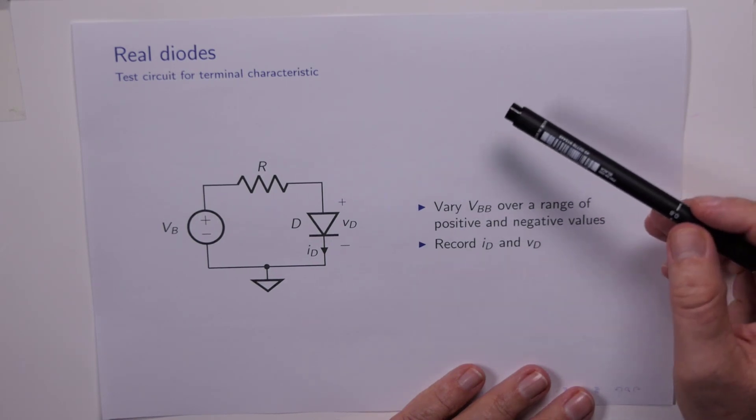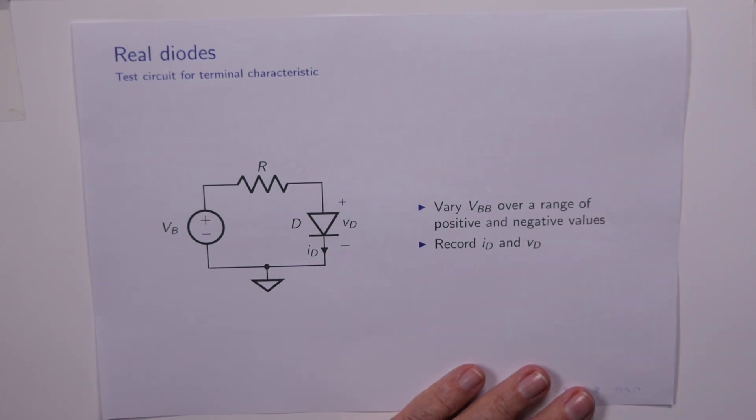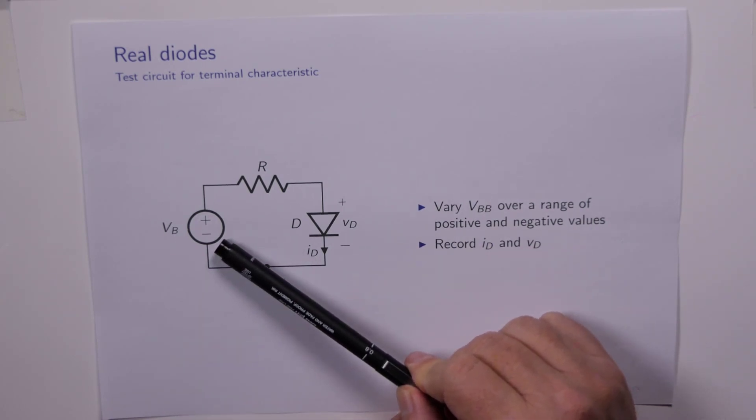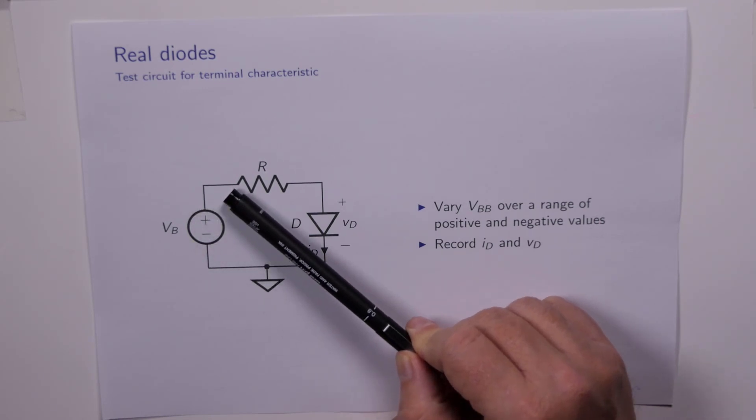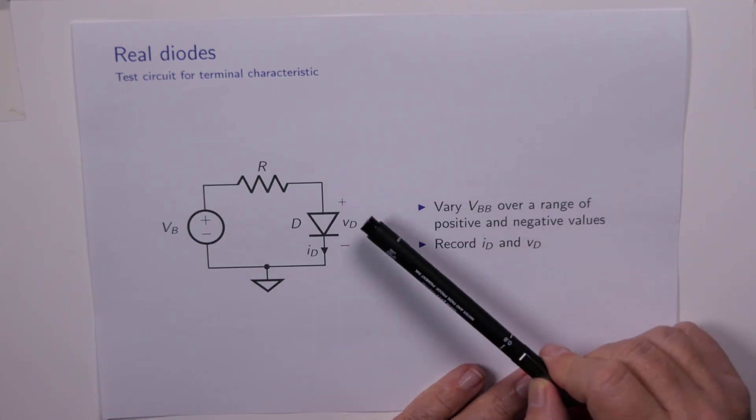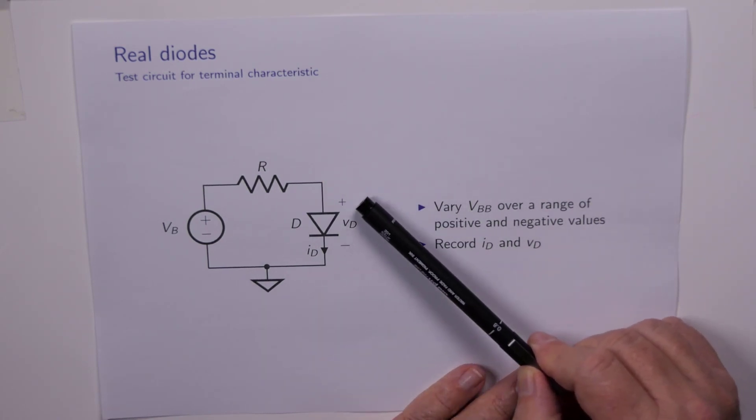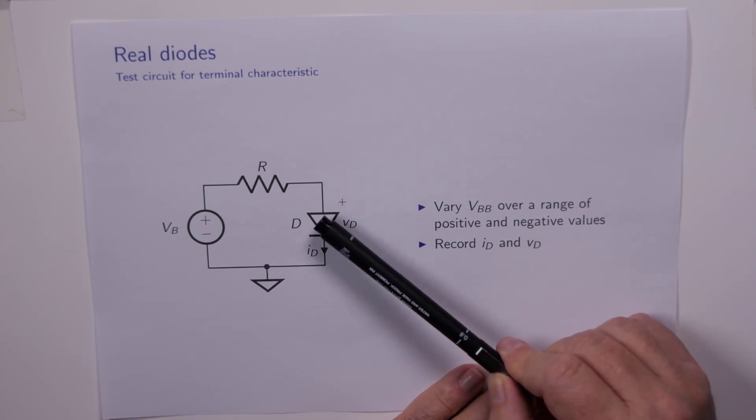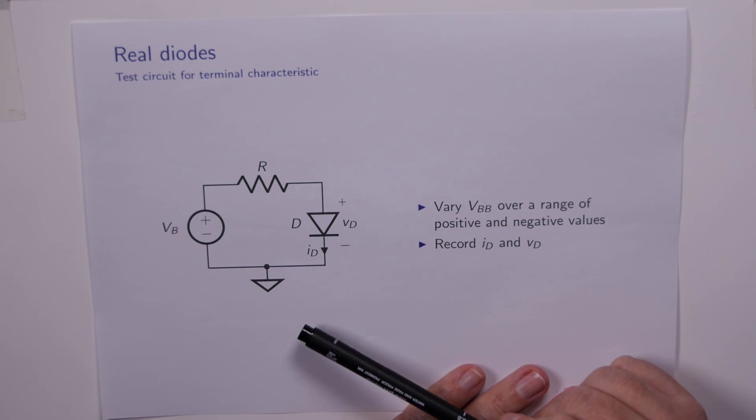Real diode being one we've purchased from some manufacturer. We have a variable DC voltage source VB which can output positive and negative voltages. It's connected to the diode via this current limiting resistor R. We are choosing to measure the diode voltage from the anode to the cathode, and we are drawing the diode current in this direction here.